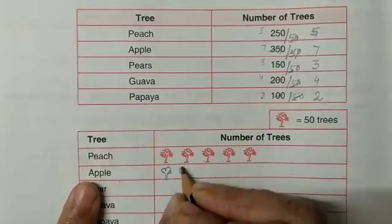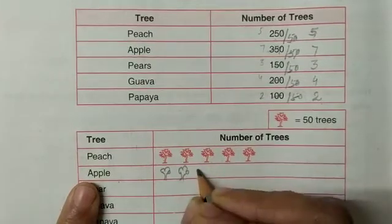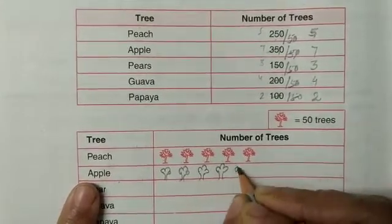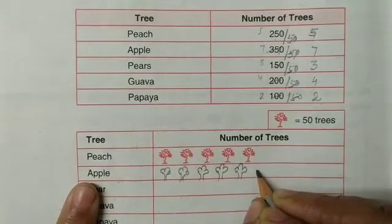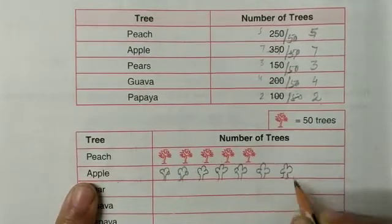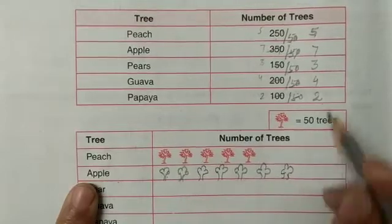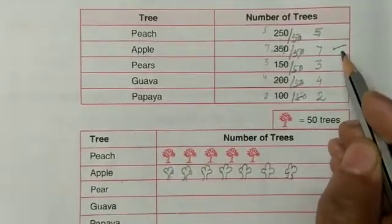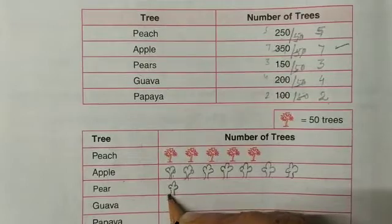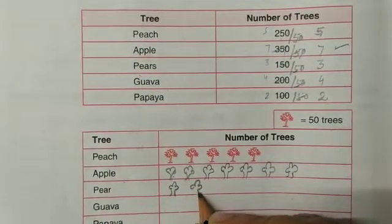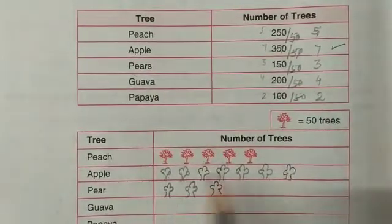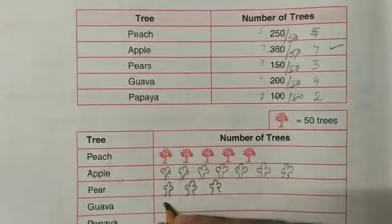You can draw 7 trees like this: 1, 2, 3, 4, 5, 6, 7 — because apple trees are 7. Pears are 3, so you can draw three trees. Similarly, guava — you have 4, so you can draw 4 trees.